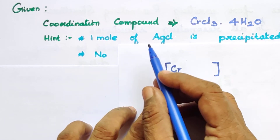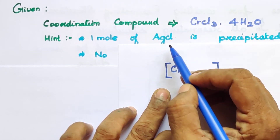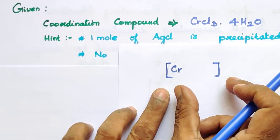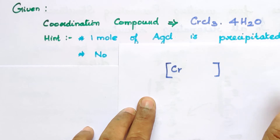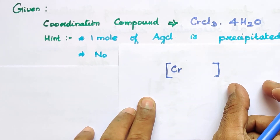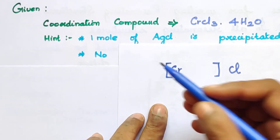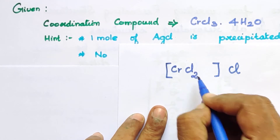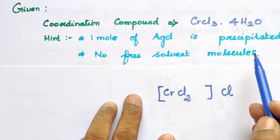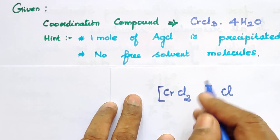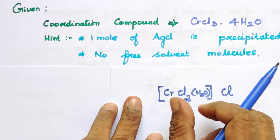So how can we do this? One mole of AgCl is precipitated, and in the formula there are 3 Cl. So 1 Cl forms AgCl precipitate, and 2 Cl are in the coordination sphere. In the coordination sphere the ions are not dissociated, whereas outside the coordination sphere they are. So 1 Cl is free — that gives the AgCl precipitate. 2 Cl equals 1 — that is inside the molecule. For 4H2O, the hint is no free solvent molecules, so H2O free equals zero, meaning all 4H2O are inside the complex ion.